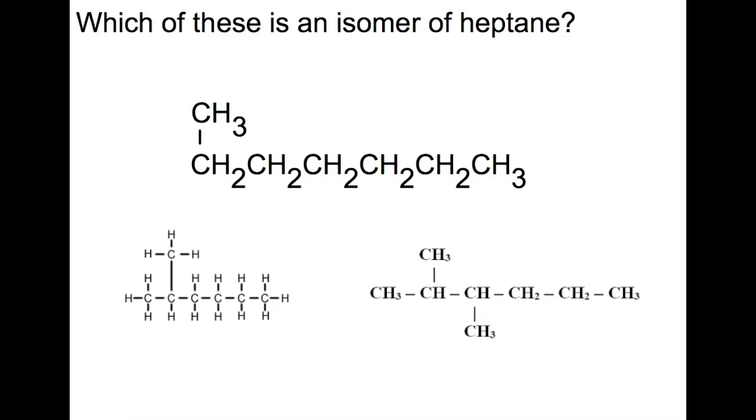So which of these is an isomer of heptane? First of all you need to think about what the formula is for heptane, C7H16. So your first thought would be to look at all of the structures and find out if they all fit that formula. So this one here fits the formula and so does this one. This one however does not.